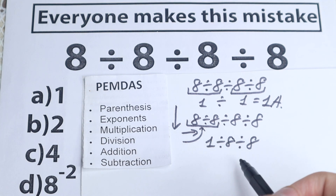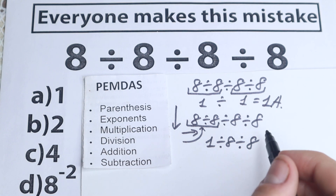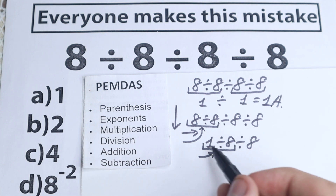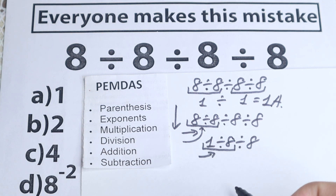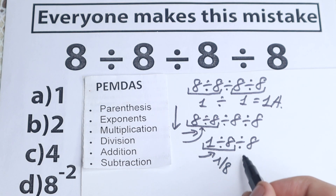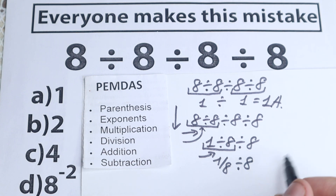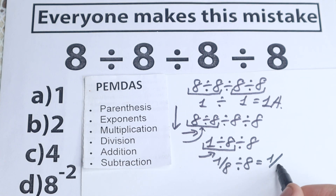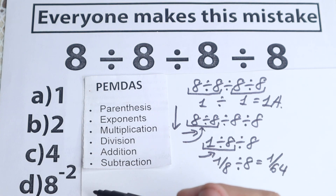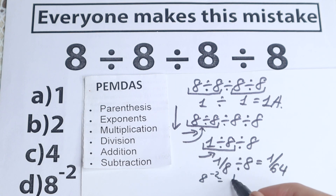What is our next step? We still have division, and we look again at the first sign from left to right — it's division once more. So we divide: 1 divided by 8 is not an integer, so let's write it as a fraction: 1 over 8, and we still have one division remaining. So 1/8 divided by 8 equals 1/64, or equivalently 1/8 times 1/8. This is our answer.